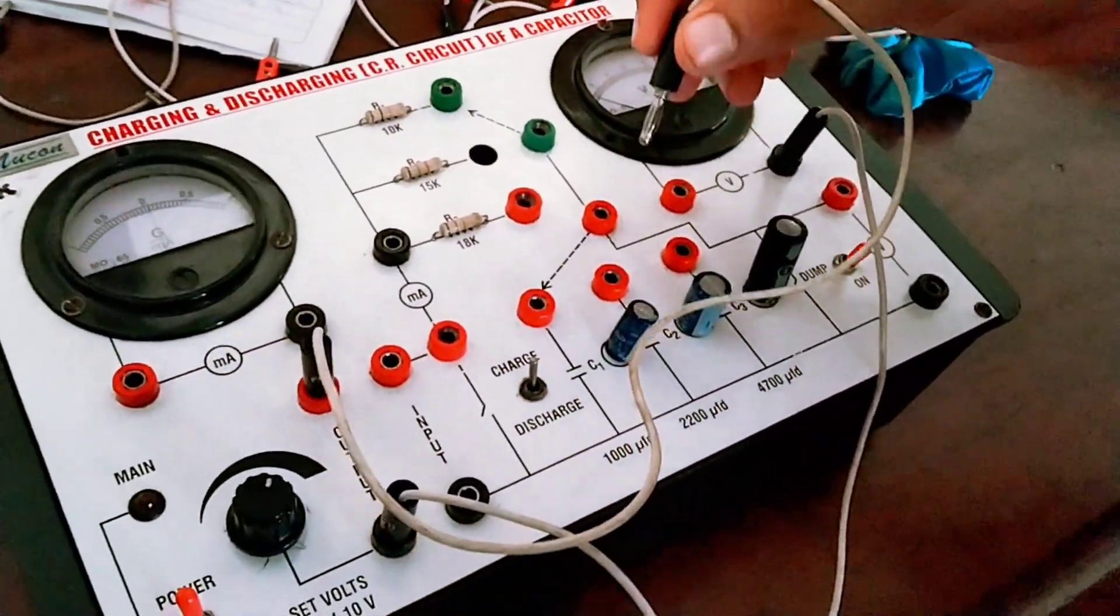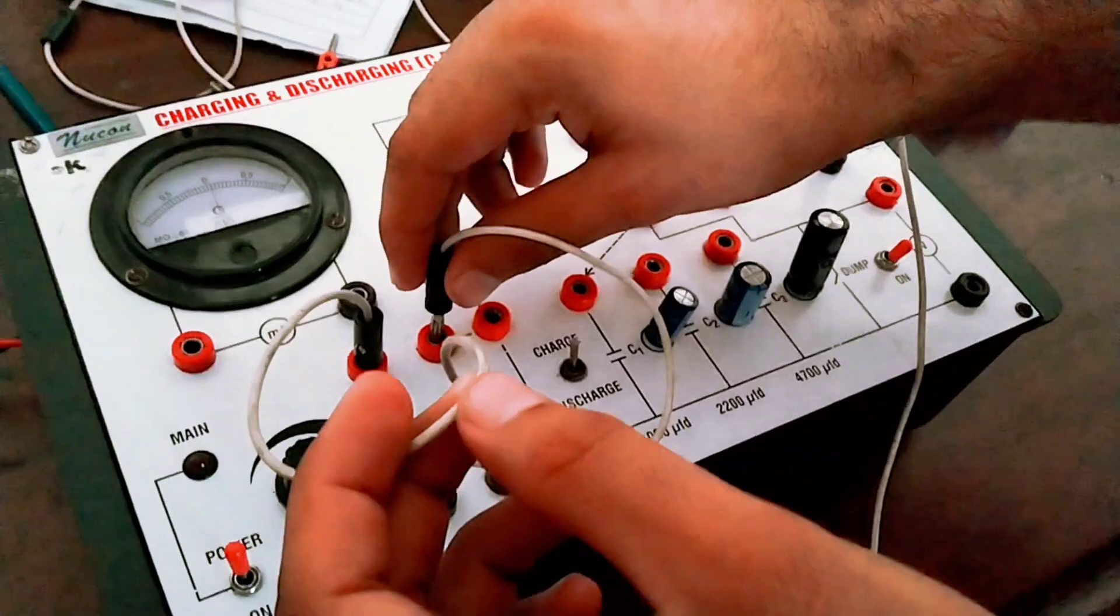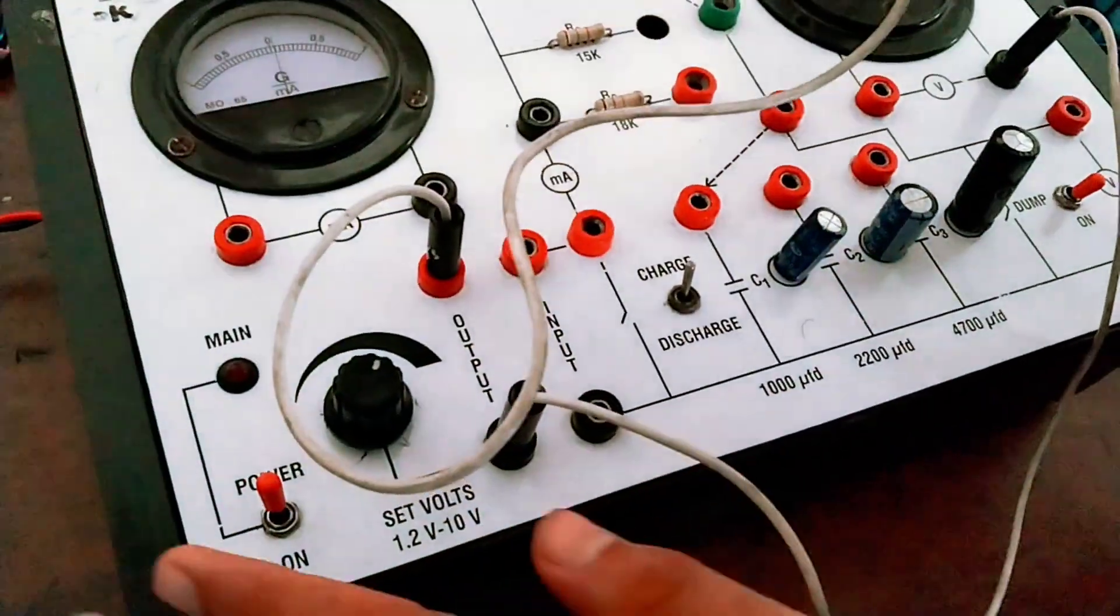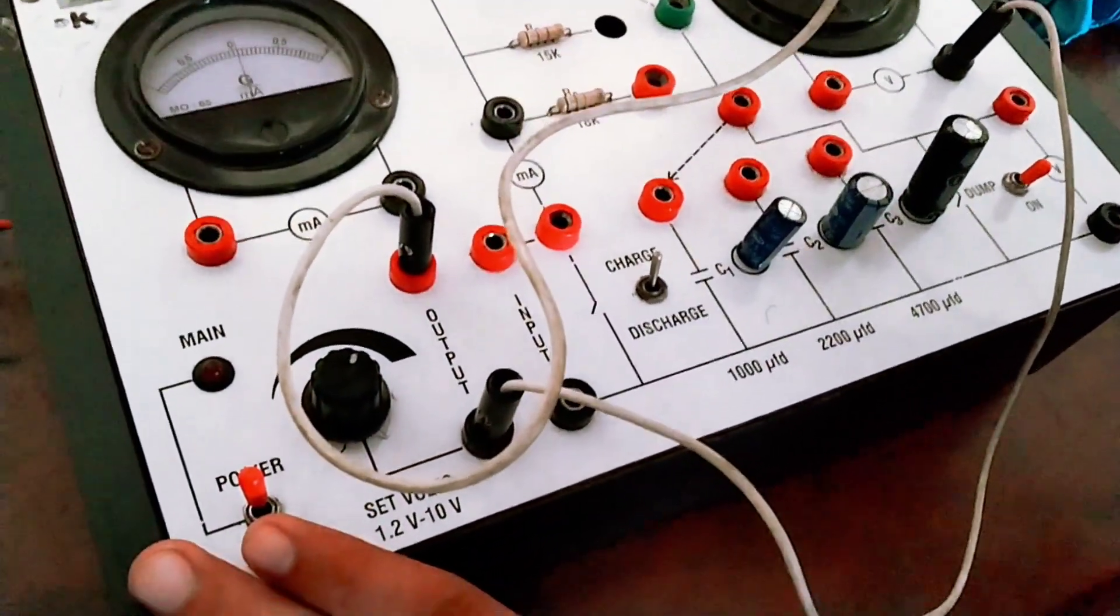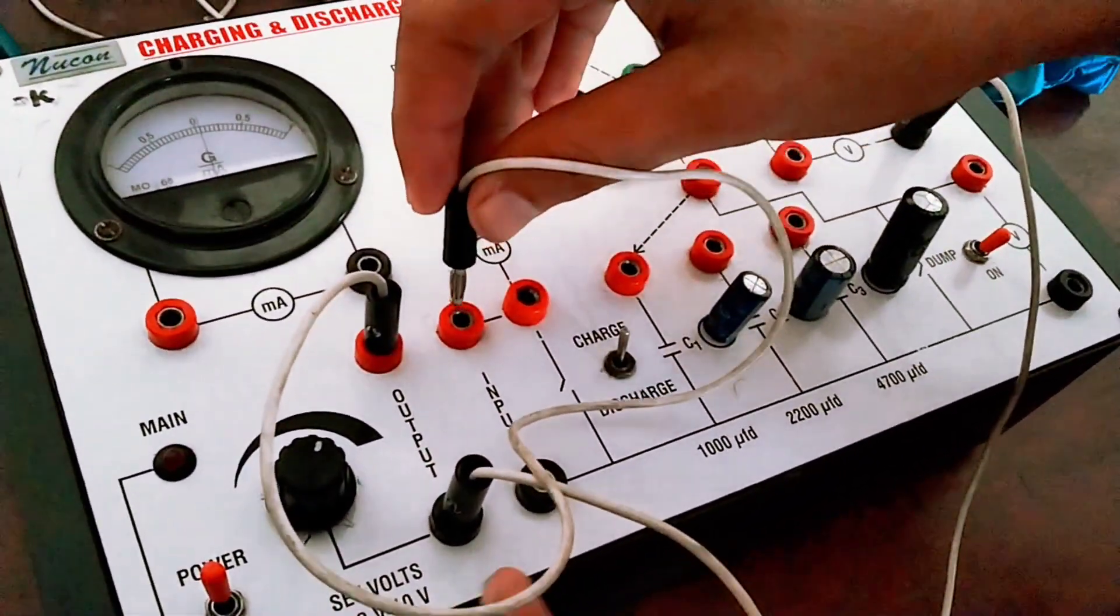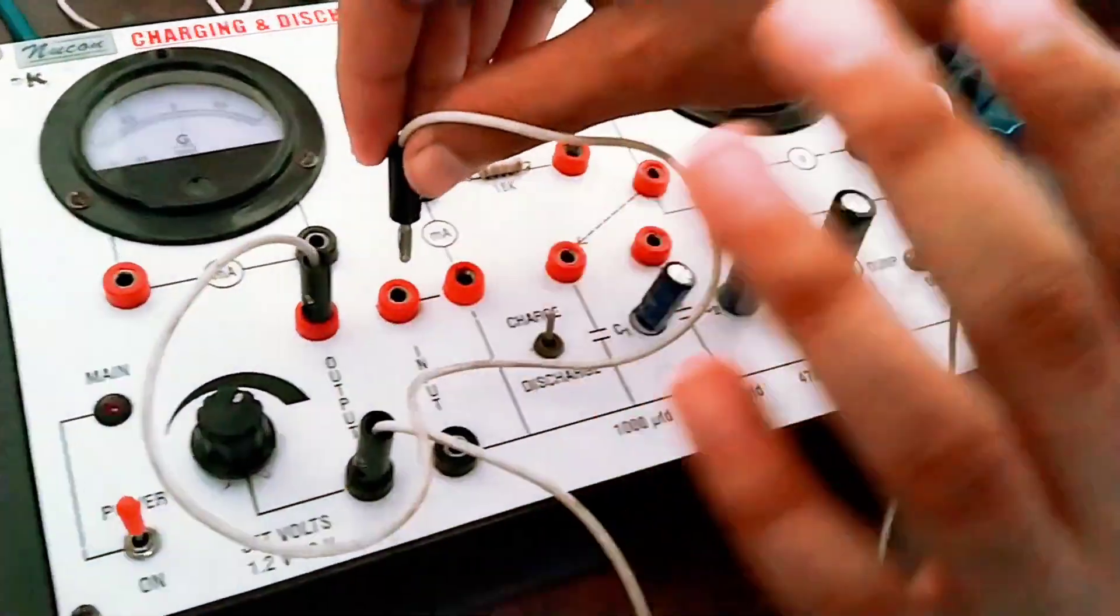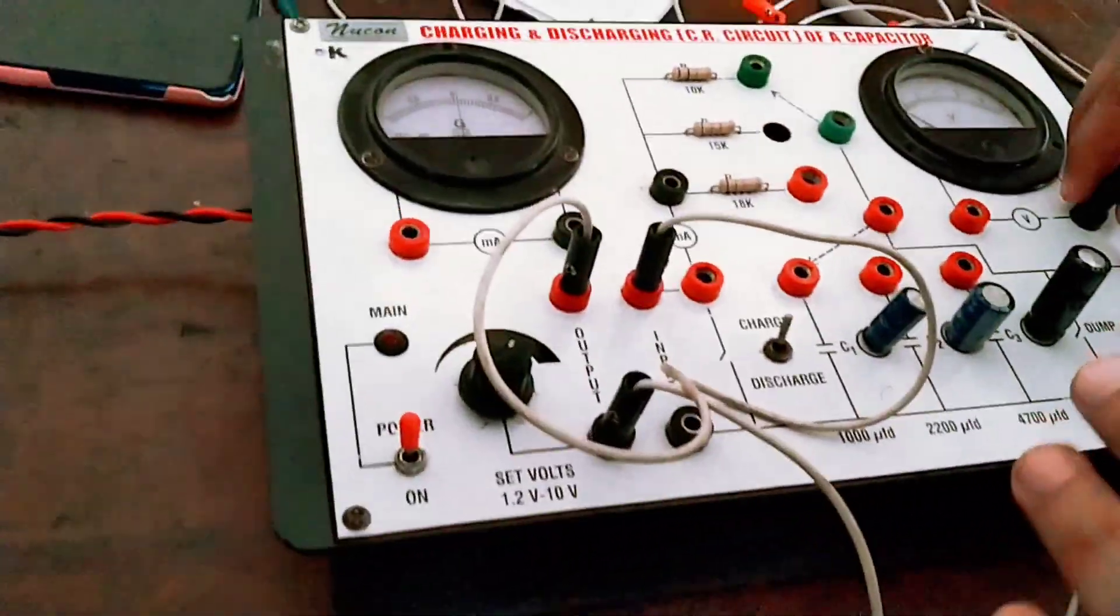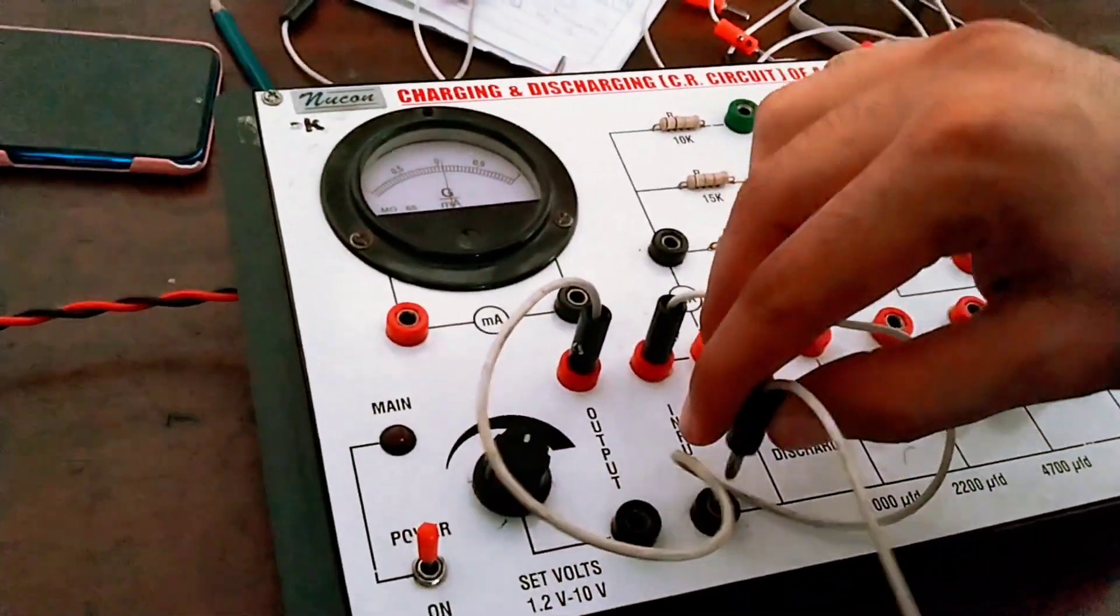The connection is same both for charging and discharging. So now this is the process - I am giving our source of voltage which is 10 volt we have already seen. So I am giving this voltage to the circuit. For this purpose I make this connection output to input.